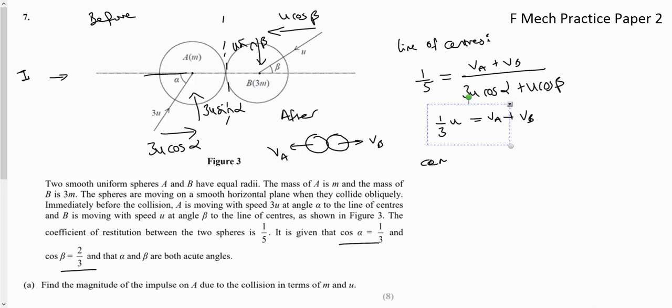We've also then got conservation of linear momentum. So in this direction, I'm going to take it going from left to right to be the positive direction. So that means to start with, we've got particle A is m times 3u cos alpha. Now particle B is travelling in the opposite direction, so that's going to be negative. So that's got mass 3m and its speed is u cos beta. And afterwards, we're going to have, if you look at my after picture, so we've now got A travelling in the opposite direction and B travelling in the positive direction. Remember we know what cos alpha and cos beta are, so I can simplify this to negative u equals negative velocity of A plus the velocity of B.